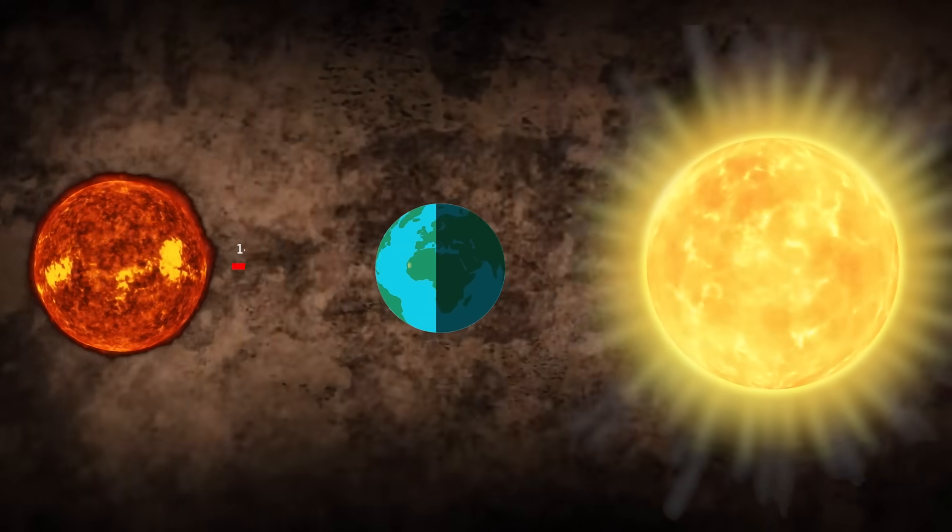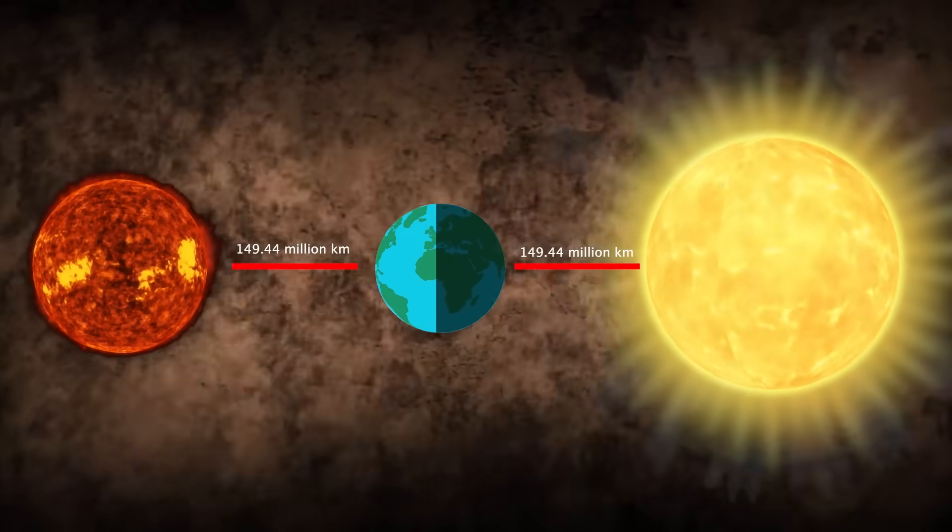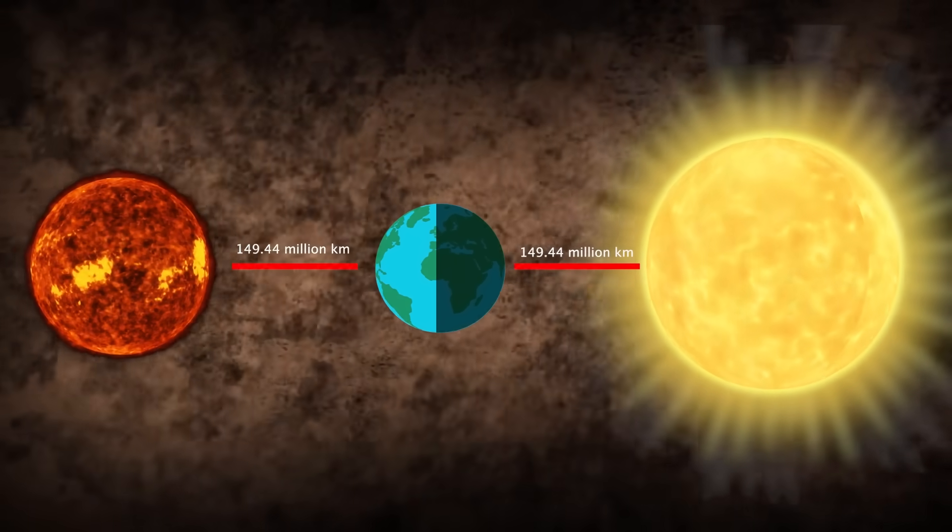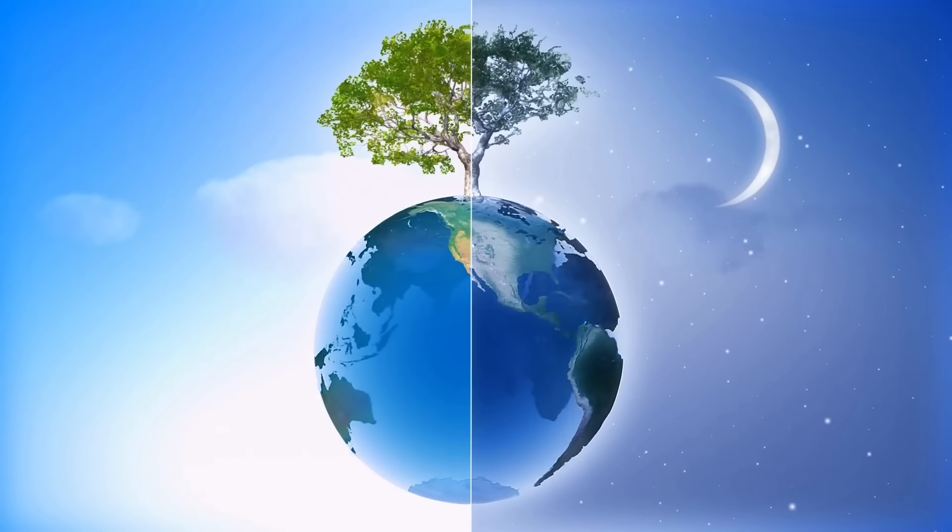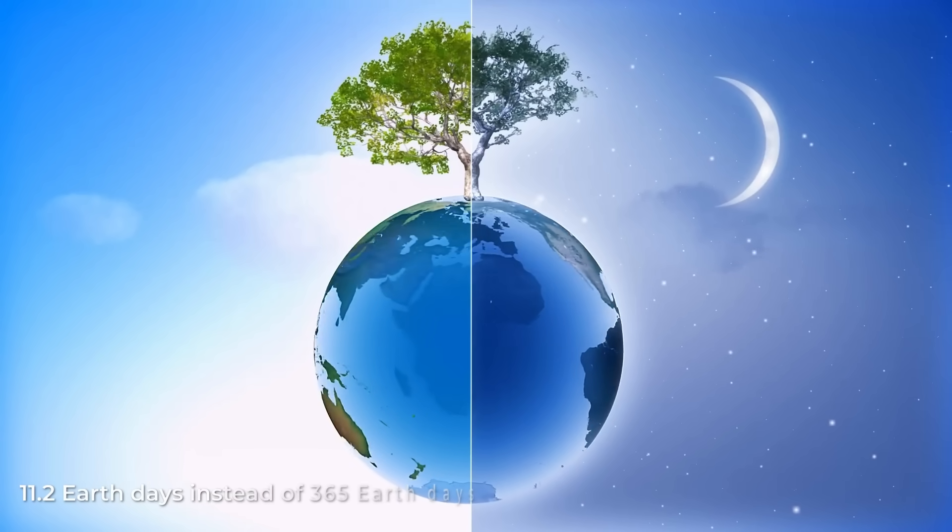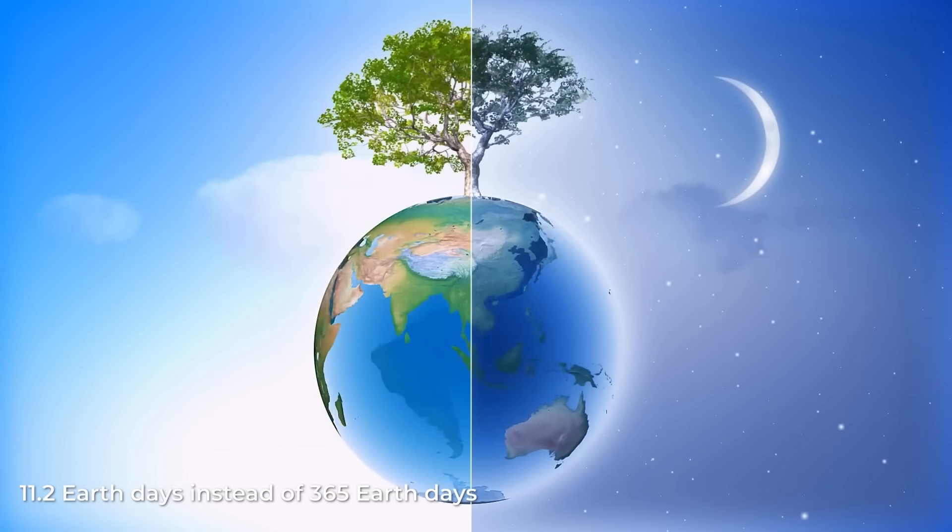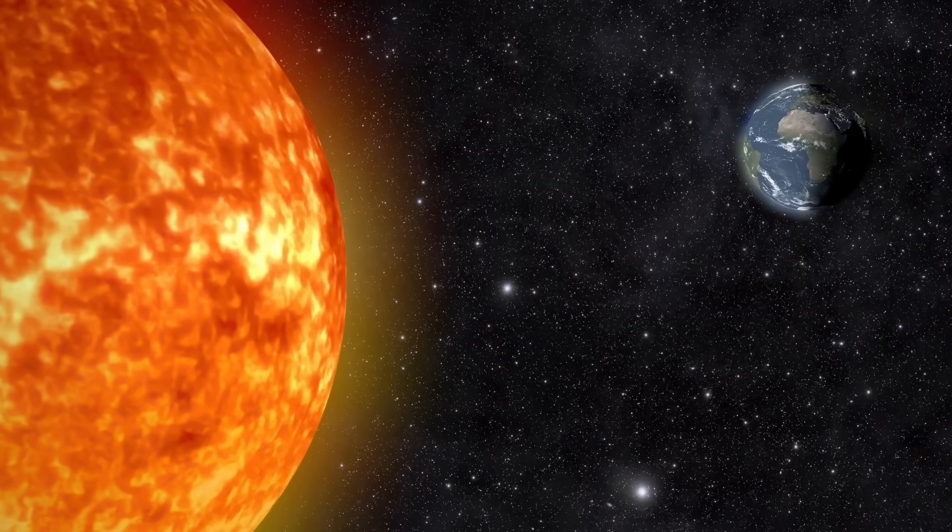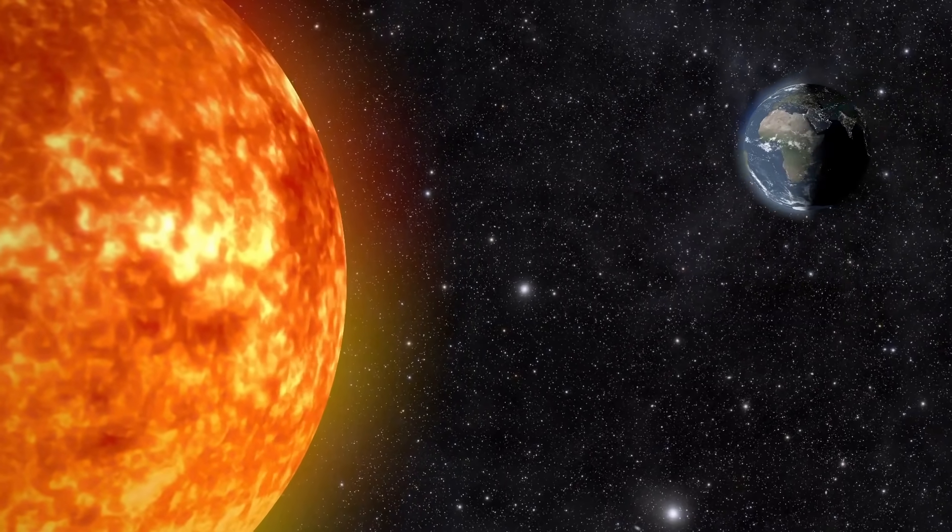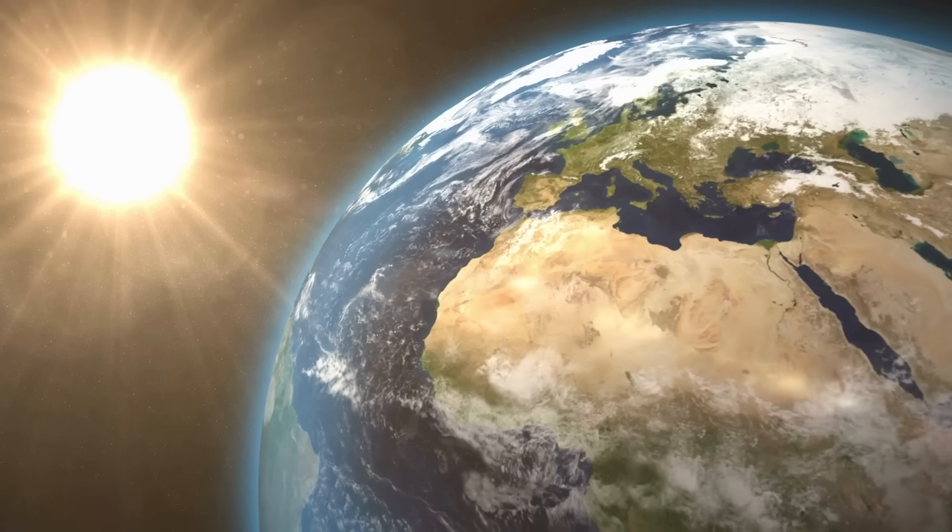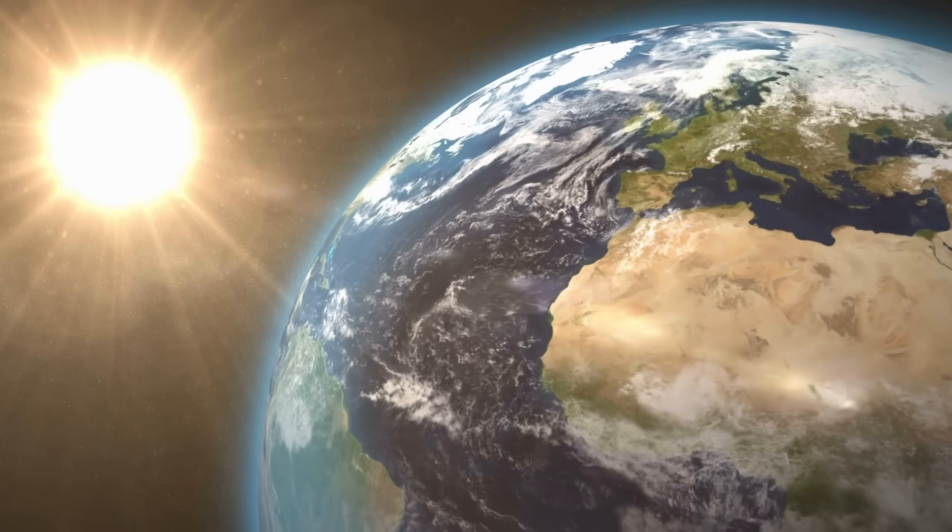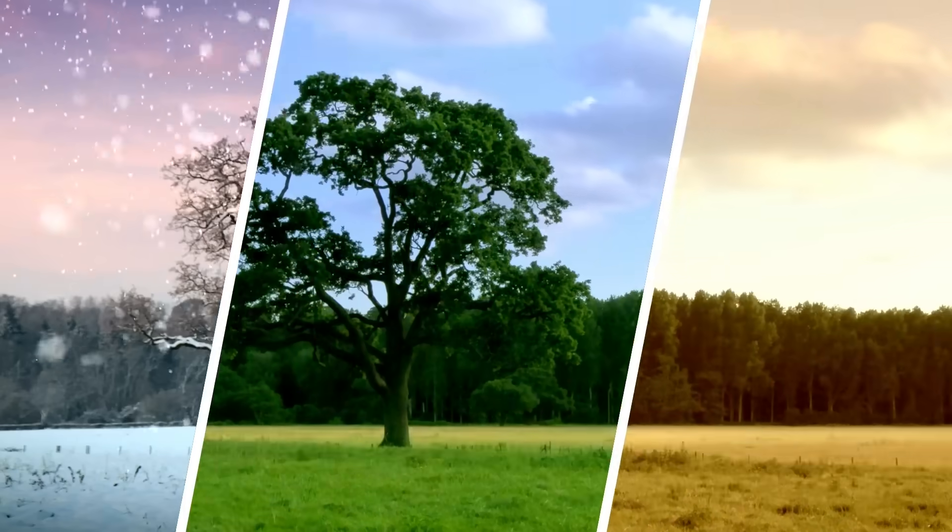For example, if the Earth were the same distance from Proxima Centauri in proportion to the distance it is from the Sun, it would have an orbital period of about 11.2 Earth days instead of the current 365 Earth days. Yes, as you just heard, it would take Earth only 11.2 days to go around Proxima Centauri. This means that a year would be much shorter, and the seasons would be much shorter, that is, if there were seasons.